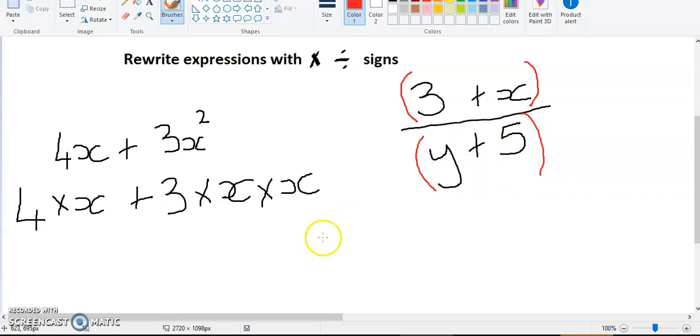So when I expand, I'm going to have my brackets. So that just means I've got 3 plus x in the first bracket and I'm dividing it by y plus 5 in the second bracket. And that makes it very clear for us.